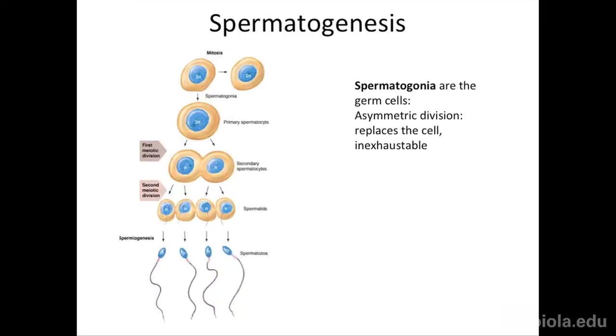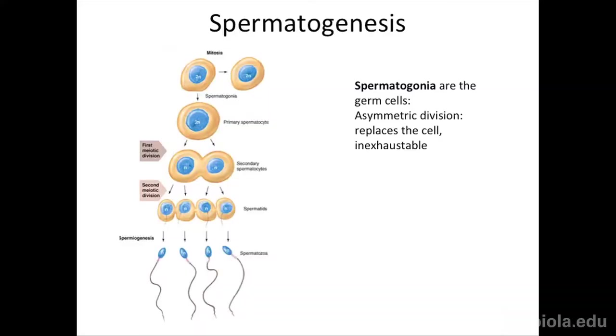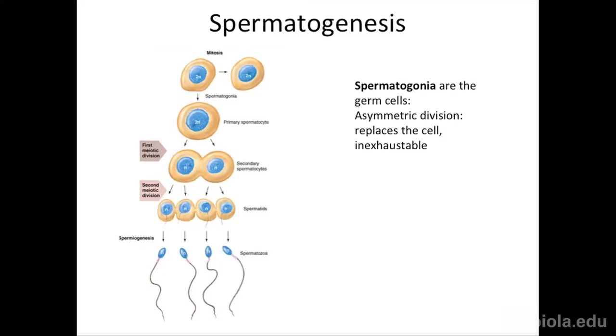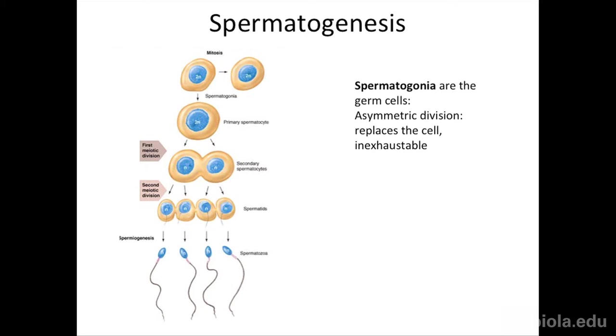Spermatogonia undergo what's called an asymmetric cell division. They replenish themselves — one daughter cell remains a spermatogonia, and the other is called a primary spermatocyte, which is destined to divide and become sperm. It's still a 2N cell; this first division is actually mitosis. The primary spermatocyte is destined to go through the two rounds of meiotic division. It's an asymmetric mitosis, producing two distinct types of cells, similar to stem cells.